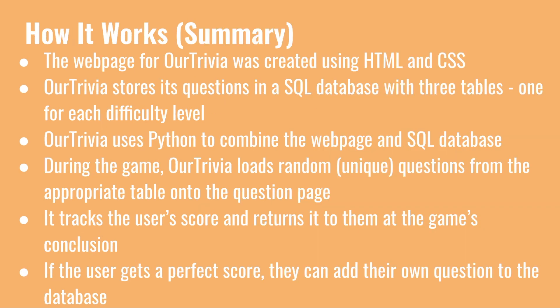Basically, how it works is that Art Trivia is a union between a webpage and a SQL database using Python. The webpage is created using HTML and CSS, and it stores questions in a SQL database using three tables, one for each difficulty level. With each question is stored its correct answer and the user who provided it. During the game, Art Trivia uses the Python program to load random unique questions from the appropriate table onto the question page, track the user's score, and return it to them at the end of the game. If they get the perfect score, they'll be redirected to a separate results page where they can enter their own question into the database.